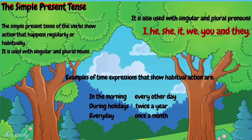Now let's have the simple present tense. The simple present tense shows action that happens regularly or habitually. It is used with singular and plural nouns and pronouns: I, he, she, it, we, you, and they. Here are some examples of time expressions that show habitual action: in the morning, during holidays, every day, every other day, twice a year, and once a month.